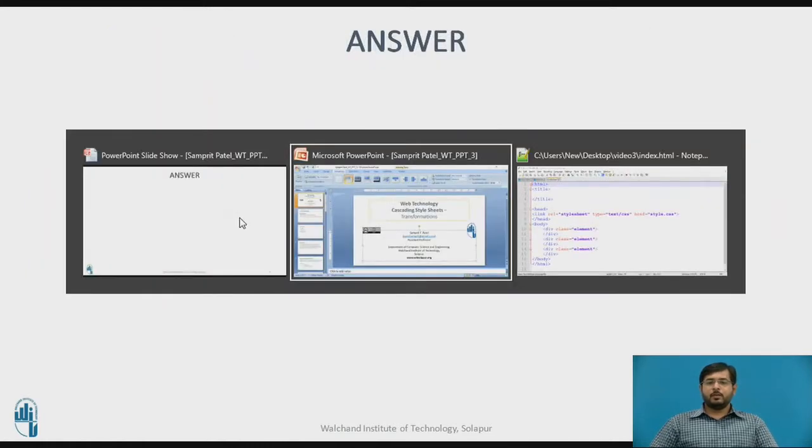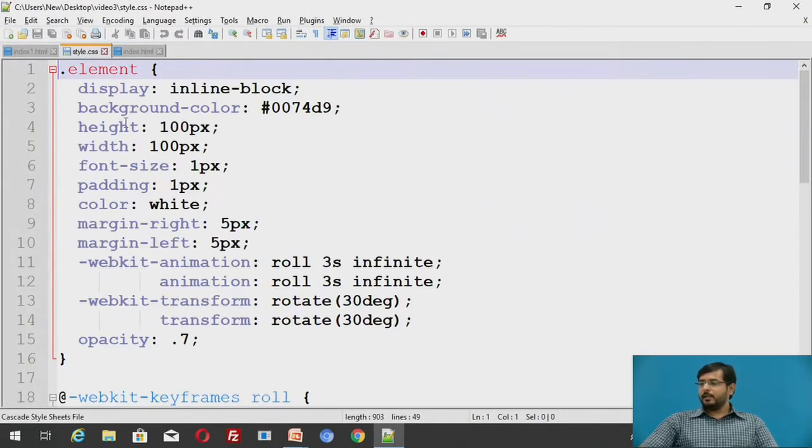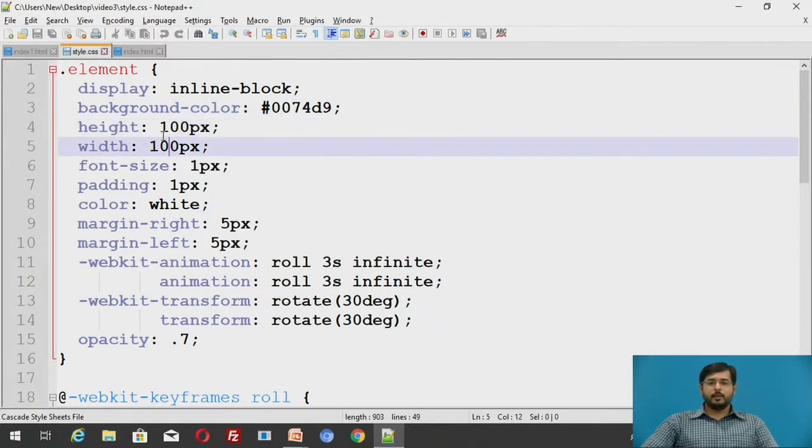Now we'll see about it. This is the style sheet where we have defined an element. It should have an inline block with a background color of a given hash code. This hash code is for shade of blue. Its height is 100 pixels and width is 100 pixels. Basically it would be a square. Its font size is 1 pixel. Padding we have given between all the elements is 1 pixel.